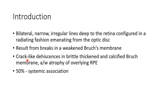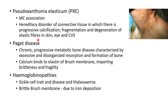Angioid streaks result from breaks in a weakened Bruch's membrane. They are basically crack-like dehiscences in brittle, thickened and calcified Bruch's membrane, which is associated with atrophy of overlying retinal pigment epithelium. 50% of cases of angioid streaks have a systemic association.